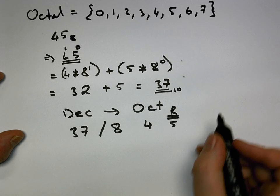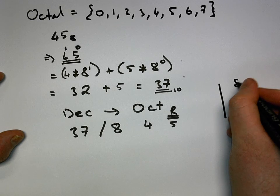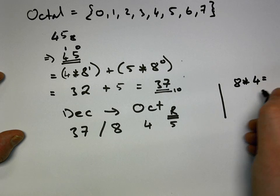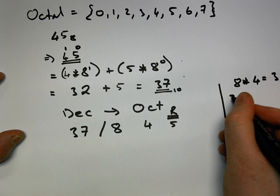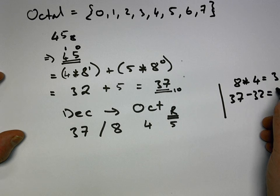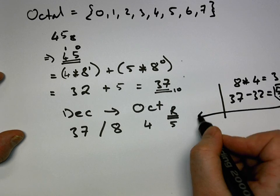So we think about it just for one minute. If we say 8 multiplied by 4, that's equal to 32. 37 minus 32 gives us 5. So this 5 is our remainder here.